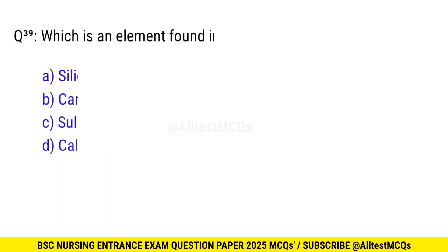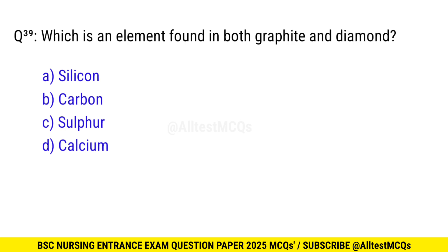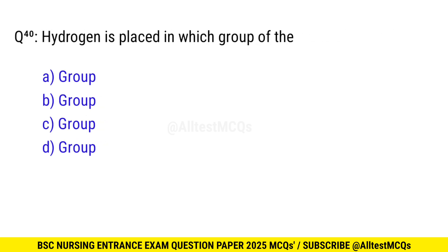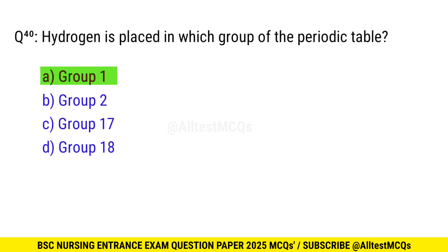Question No. 39: Which is an element found in both graphite and diamond? The right option is B: Carbon. Question No. 40: Hydrogen is placed in which group of the periodic table? The correct option is A: Group 1.